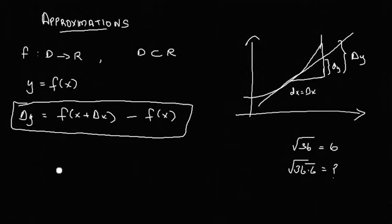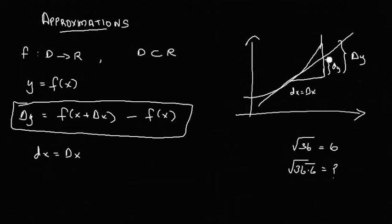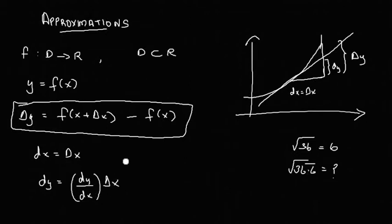We have a graph here. On the graph, dx and Δx are taken as equal. The curve shows a point, and Δx is along the line. We note that dy and Δy are approximately equal, with only a minute difference. We write: dy equals dy by dx times Δx.